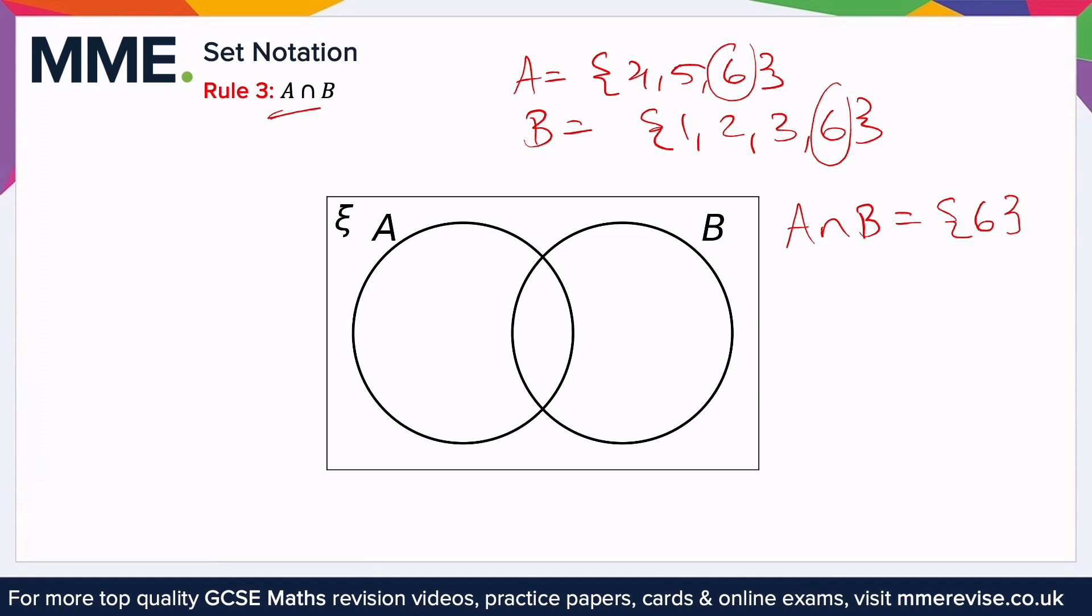Representing this on the Venn diagram is really easy. It's just where the two circles overlap, this bit in the middle.